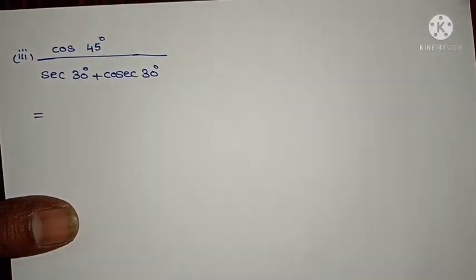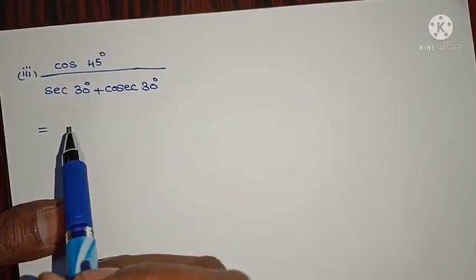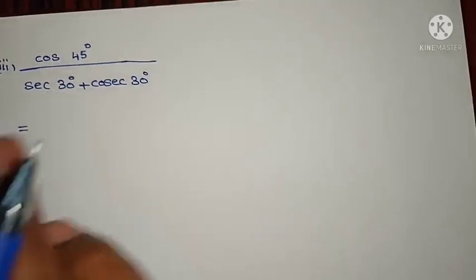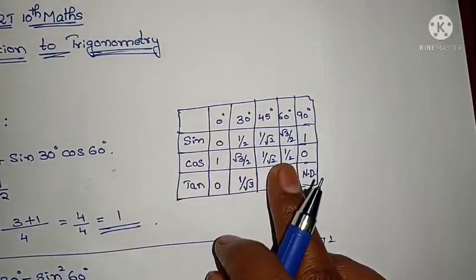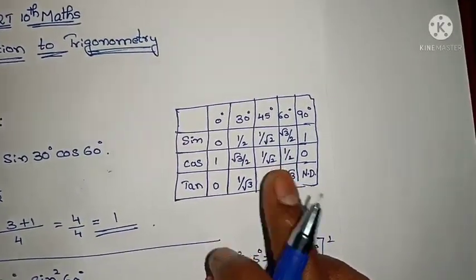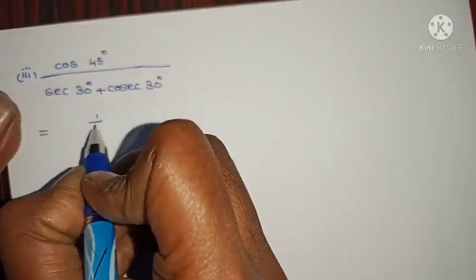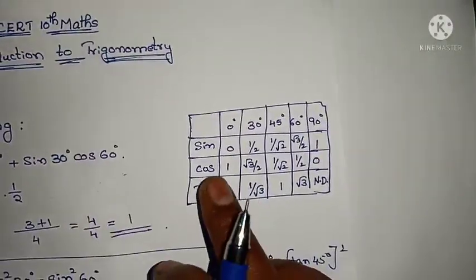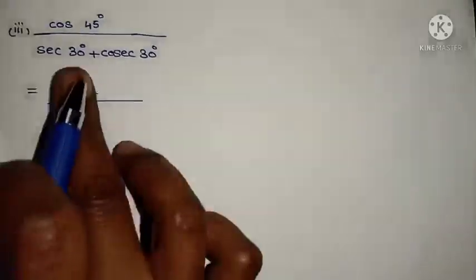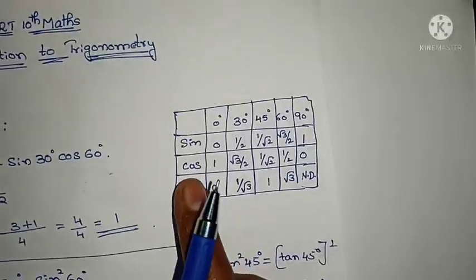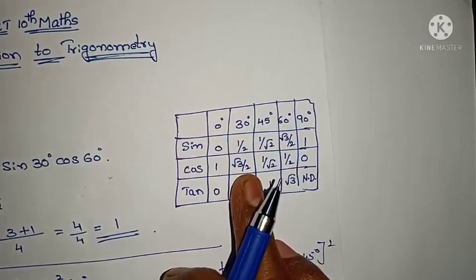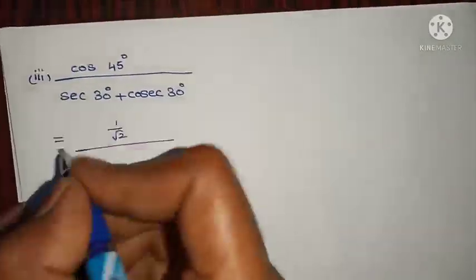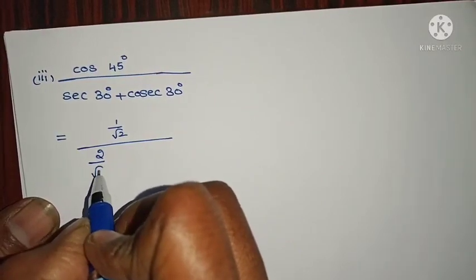Third question: cos 45 degrees divided by (sec 30 degrees plus cosec 30 degrees). Cos 45 is 1/√2. Secant is the reciprocal of cos 30. Cos 30 is √3/2, so secant 30 is 2/√3. Cosecant is the reciprocal of sine. Sine 30 is 1/2, so cosecant 30 is 2/1.